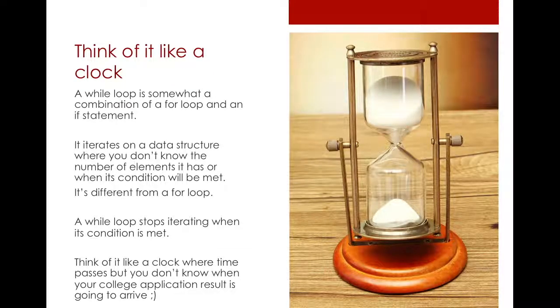A while loop is something like a clock and it's different from a for loop because it's basically a combination between a for loop and an if statement. So it's something where you don't know when your loop will stop.